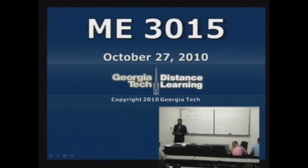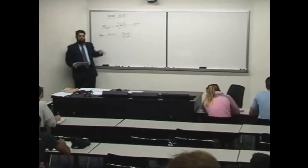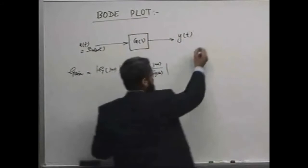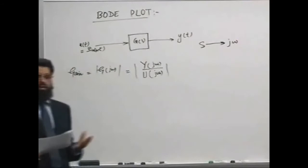As we started the Bode plot last time, this is a transfer function of any system — output over input in the S domain. We convert it into the frequency domain by substituting S as jω, because the Bode plot is plotted against frequency, showing the gain and phase response.